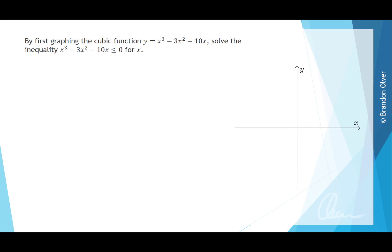By first graphing the cubic function y equals x³ minus 3x² minus 10x, solve the inequality x³ minus 3x² minus 10x is less than or equal to 0 for x.